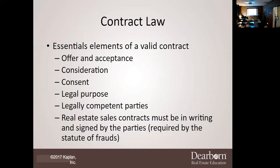Now we're getting into the good stuff — the essential elements of a valid contract. The very first initial step of a contract is offer and acceptance. When I go to Mr. Eugene and say 'I want to buy your house,' that is my offer. Mr. Eugene says 'I will accept your offer' — now we have our offer and acceptance. However, we still have to have all of the other elements present.